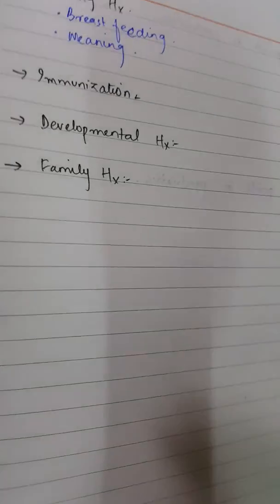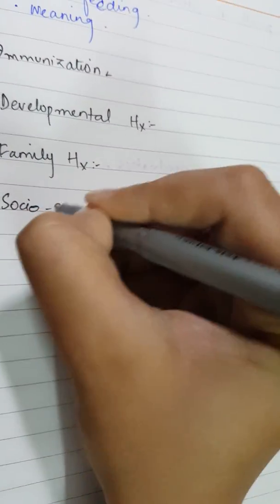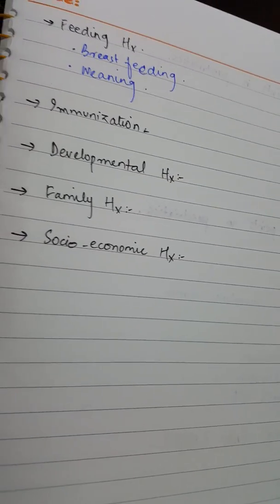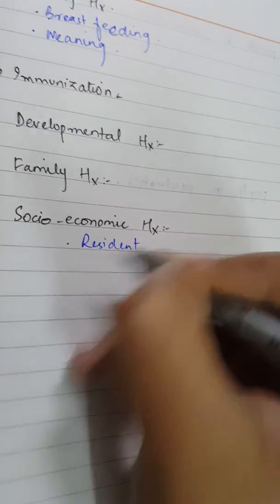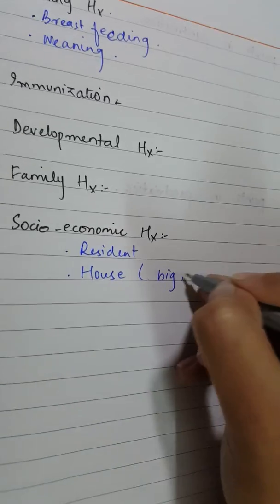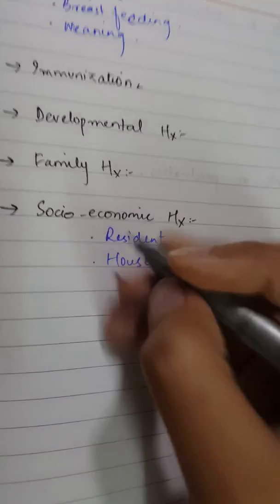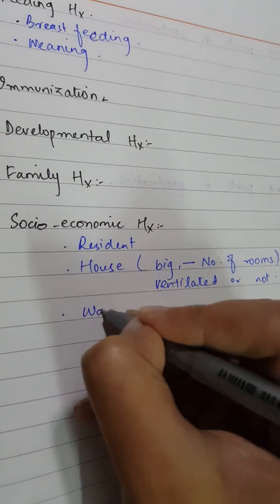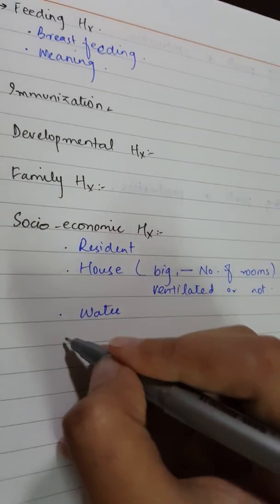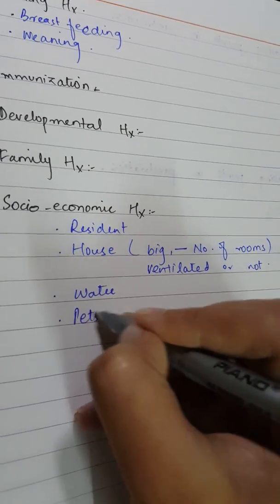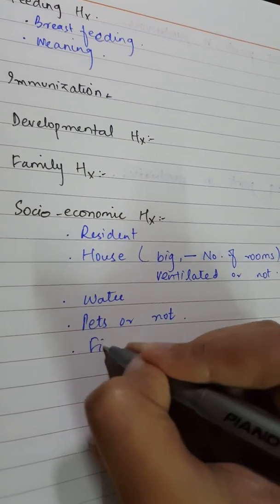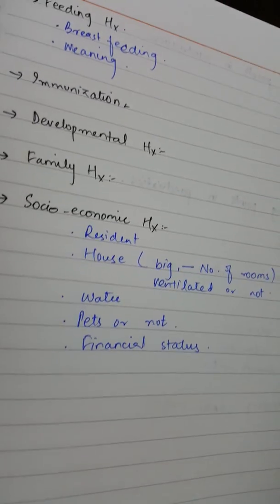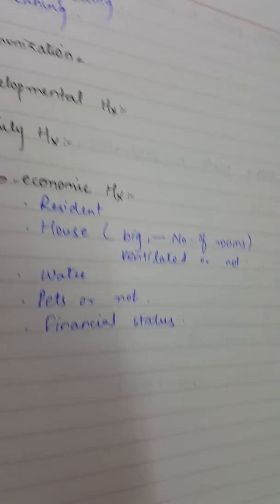The next heading is socio-economic history. Here you ask about the patient's residence — the house, judging its size by the number of rooms, whether it is ventilated, the source of drinking water and household water, whether they have pets, and their financial status. If they are having financial difficulties, you can counsel them accordingly.